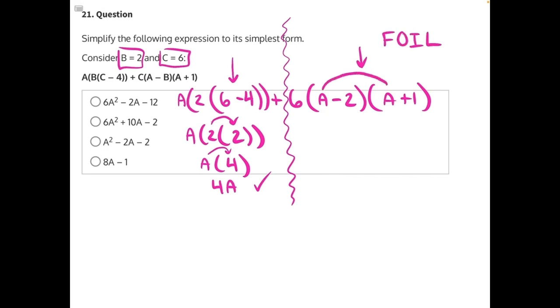So starting with our front terms, we have A times A, which would give us A squared. Our outer terms, A times a positive 1, which would give us a positive A.